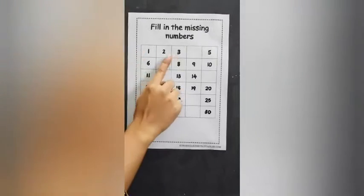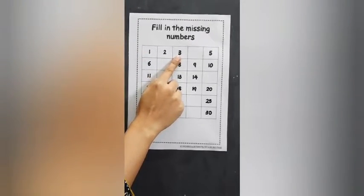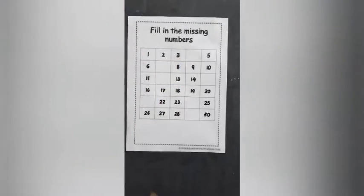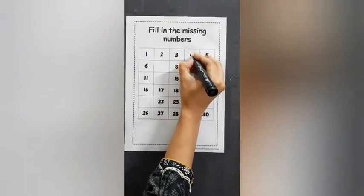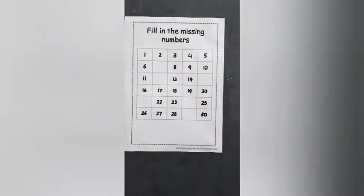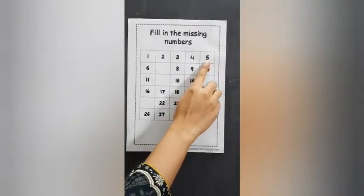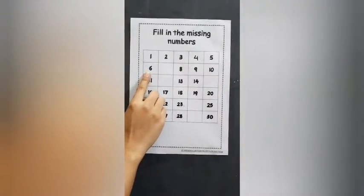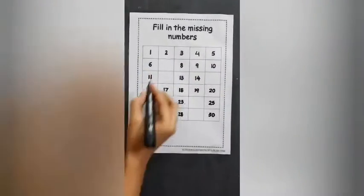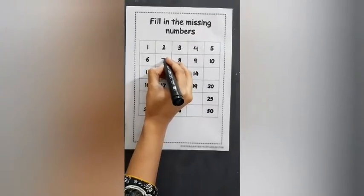1, 2, 3. What comes after 3? 4. 5, 6. What number comes after 6? 7.